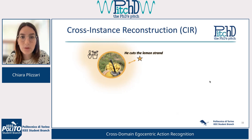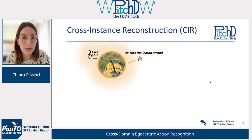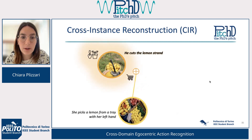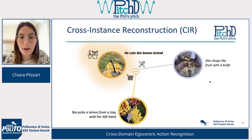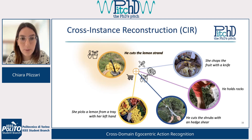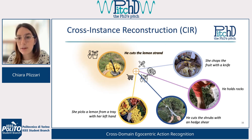We propose a method to address this domain shift by using text, because text contains rich semantic information about the action happening in the video. For example, instead of using the video itself, we use a reconstruction that is aligned to the text narration. We can represent each video as a combination of actions or videos from different scenarios or locations. For instance, a video of someone cutting a lemon strand can find similarities with videos of someone picking a lemon from a tray, or someone chopping fruit with a knife — other videos from different scenarios and locations sharing the same semantics.